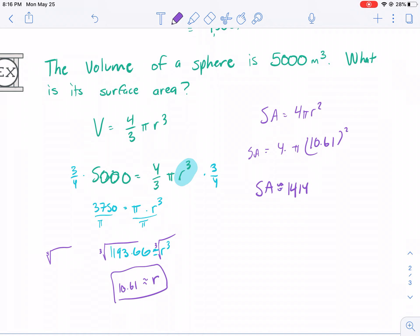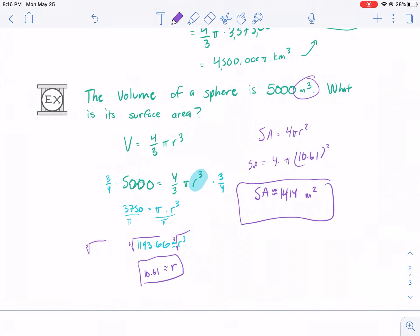Approximately, I'm going to put the about. And, then what are our units? Meters squared. So, because we're talking about volume, meters cubed. Surface area, meters squared. Two dimensions. There's our answer.